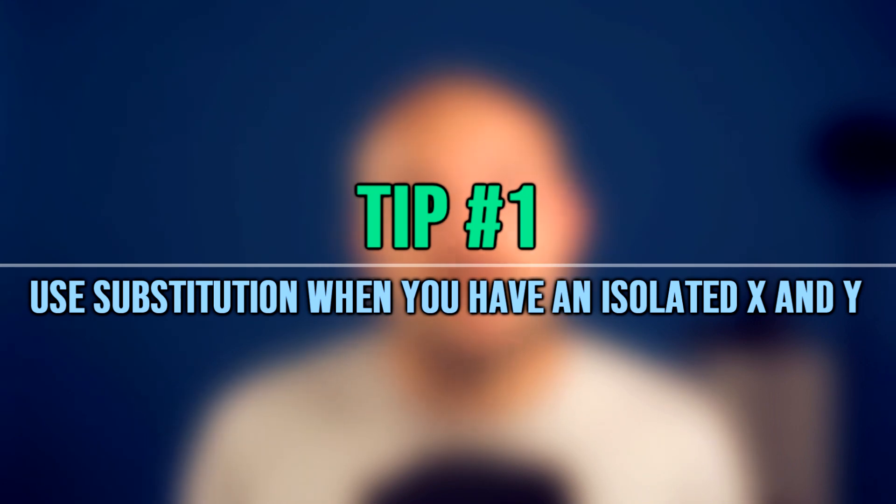So I think the first thing students need to decide when solving a system of equations algebraically is should they use substitution or should they use elimination? And trying to make this a hard decision, let's keep things simple. Tip number one that I want you to always refer to is only use substitution when you have a variable X or Y isolated, meaning the variable is all by itself. So what do I mean? I mean like this.